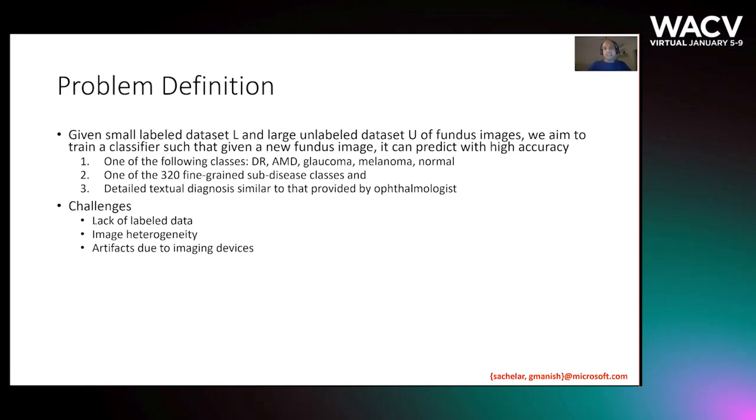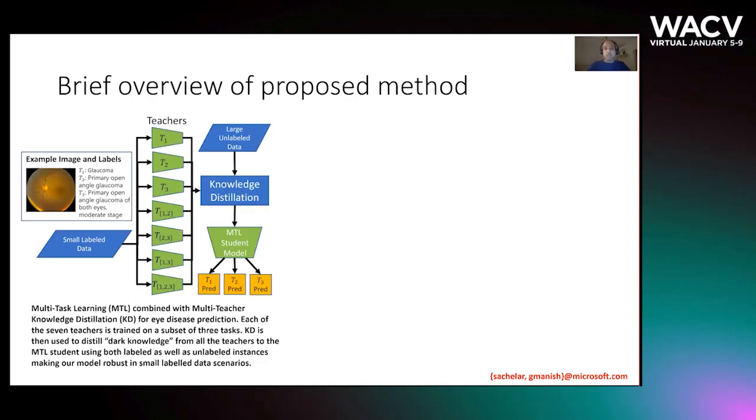There is lack of labeled data. Images are very heterogeneous depending on the devices which were used to capture, blur and so on. There are artifacts due to imaging devices as well. There is a lot of related work which can help us solve this problem, like machine learning for eye care, deep learning for medical imaging. We leverage two important tools: multitask learning and deep learning with small labeled data to solve the problem.